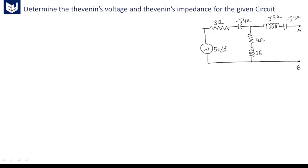Hi guys, here our question is to determine the Thevenin's voltage and Thevenin's impedance for the given circuit. So what we have to find is Vth and Zth for the given circuit. Here it is j6 ohms — this is the circuit which was given.